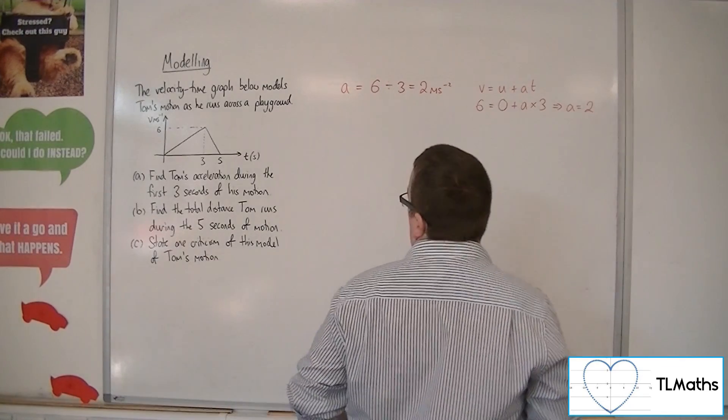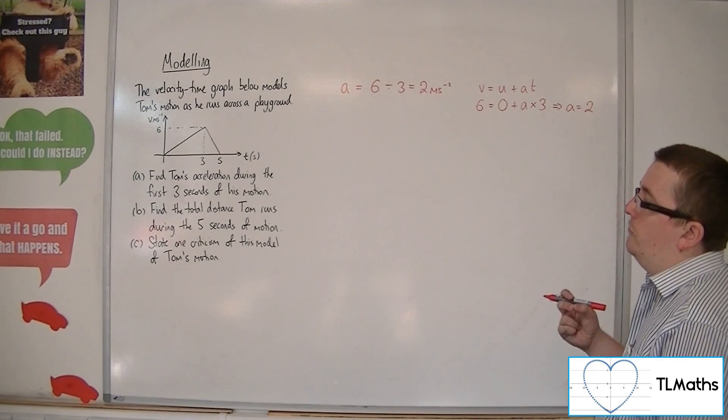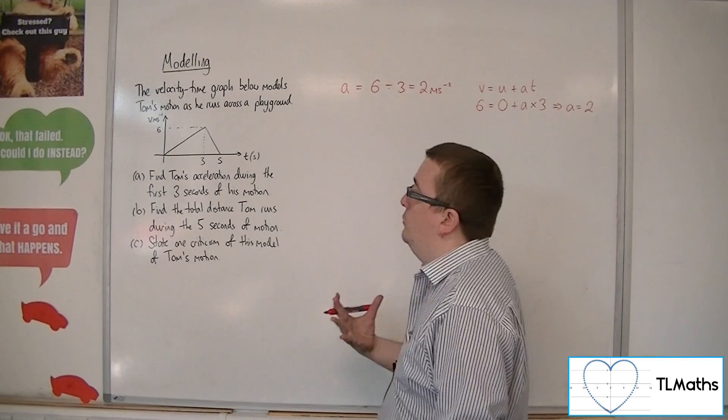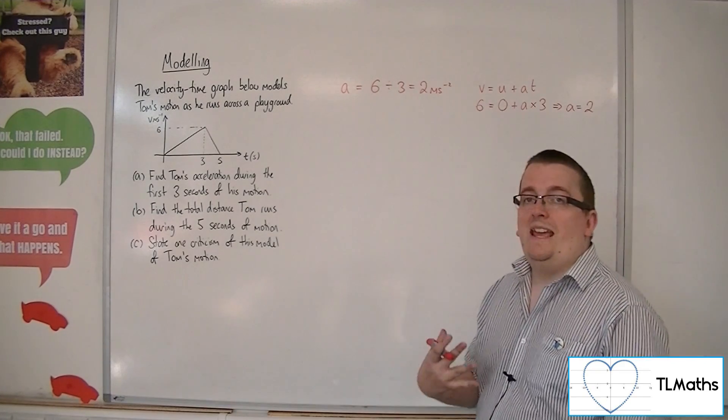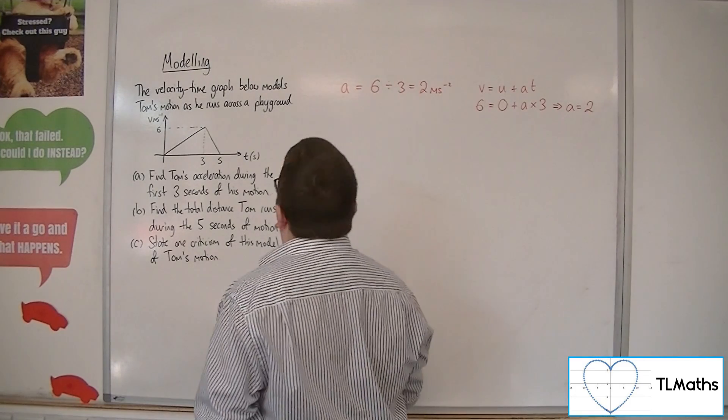Now for part B, find the total distance Tom runs during the 5 seconds of motion. With a velocity time graph like that, the total distance is the area under the line. So it's the area of that triangle, effectively.